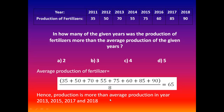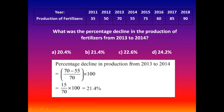The years where production is more than the average of 65 are: 2013 (70), 2015 (75), 2017 (85), and 2018 (90). So there are 4 years, and the answer is option C: 4.